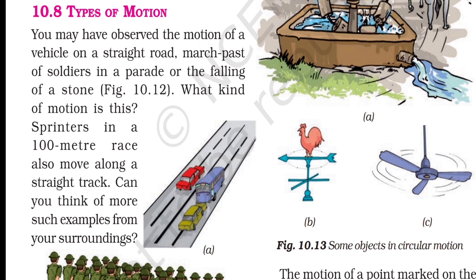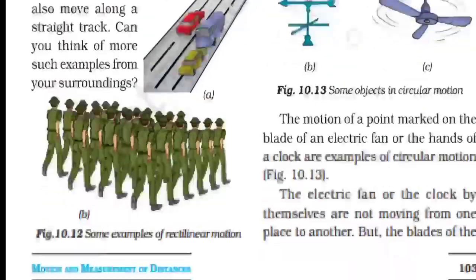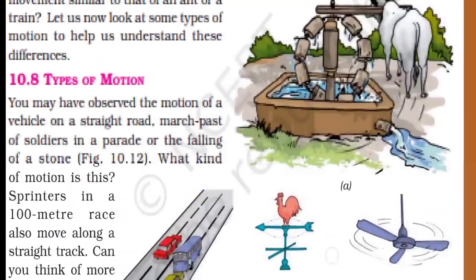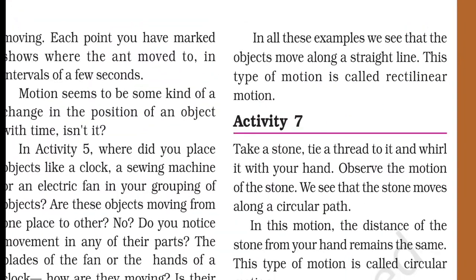Players in a 100 meters race move on a straight track. Can you think of more such examples from your surroundings? In all these examples, we see that the objects move along a straight line.